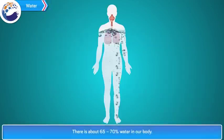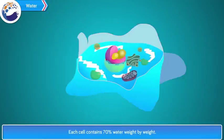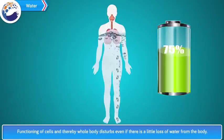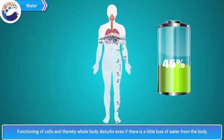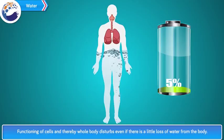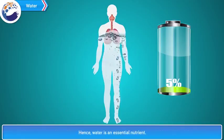There is about 65–70% water in our body. Each cell contains 70% water by weight. Blood plasma also contains 90% water. Functioning of cells and the whole body is disturbed even if there is a little loss of water from the body. Hence, water is an essential nutrient.